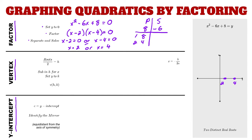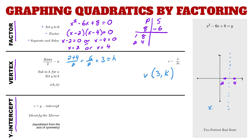To find the vertex, we know it's somewhere along the axis of symmetry, which is directly between our two x-intercepts. To find the axis of symmetry, we take the two roots, add them together, and divide by two. That gives us 3, so h equals 3 and the axis of symmetry equation is x equals 3.